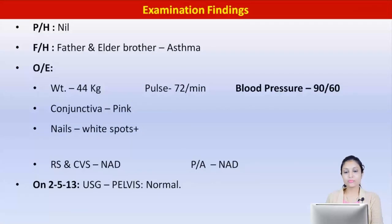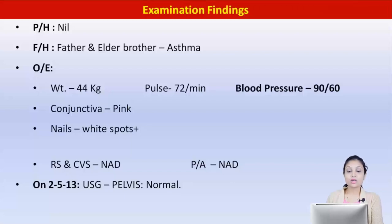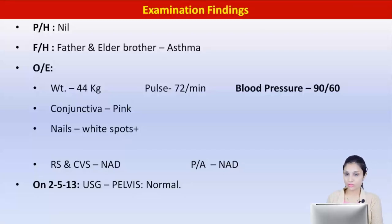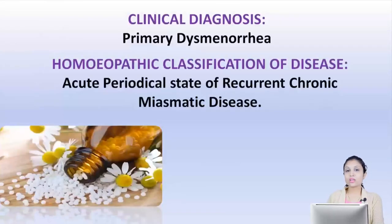On examination, she has no significant past history. Her father and elder brother are asthmatic. Her weight currently was 44 kg. Pulse was normal. However, blood pressure was low — 90 by 60. Conjunctiva normal pink. There were slight white spots on her nails. All other examination findings were normal and the sonography was also normal, so there was no pathology involved.